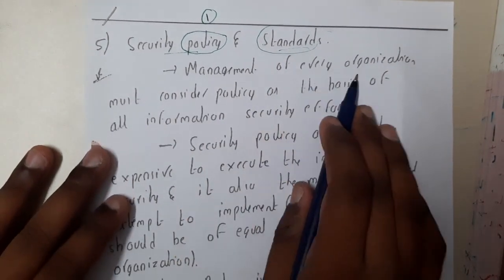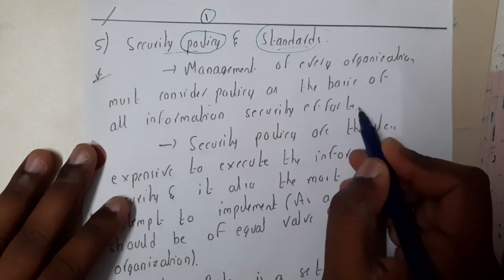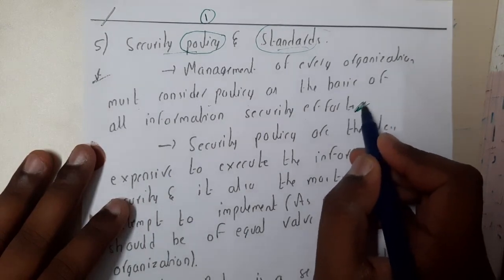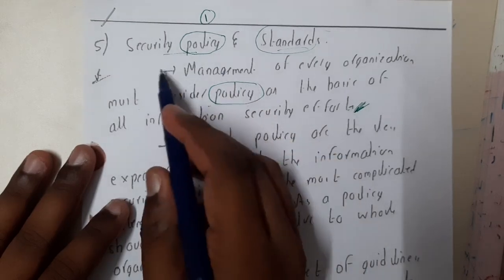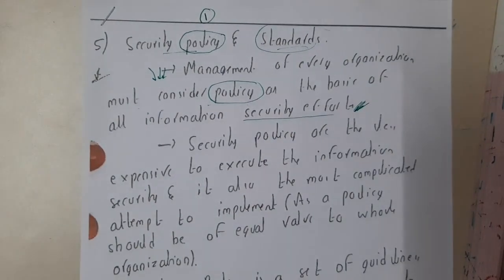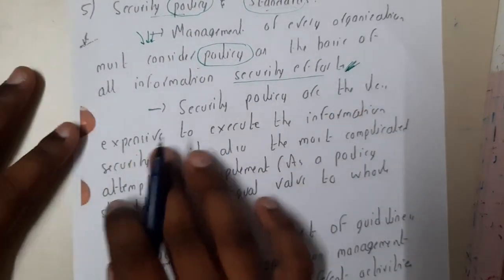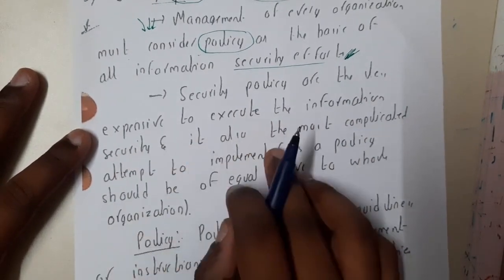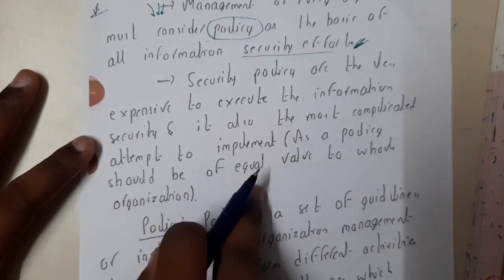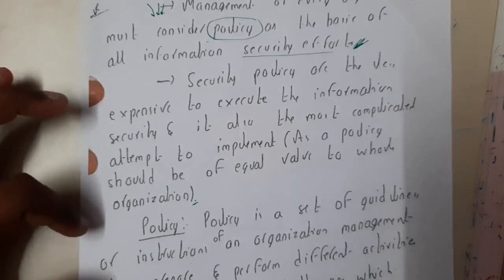Management of every organization must consider some policy as a basis of all information security efforts. Whenever an organization is running, they should have policies to be followed by each and everyone to establish their security and privacy. Security policies are the least expensive to execute in information security, yet the most complicated to implement, as a policy should be of equal value to the whole organization.